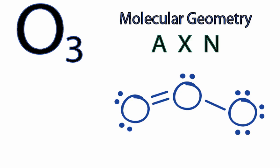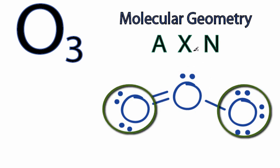So A will be the central atom, this oxygen right here. X, that's the number of things bonded to that. We have 1, 2, so AX2.